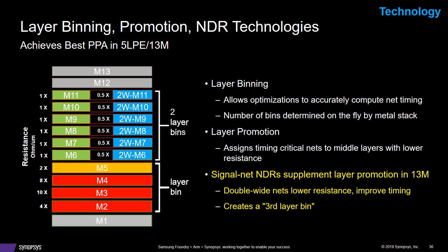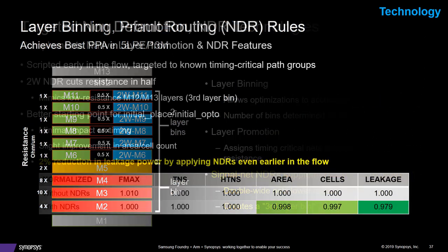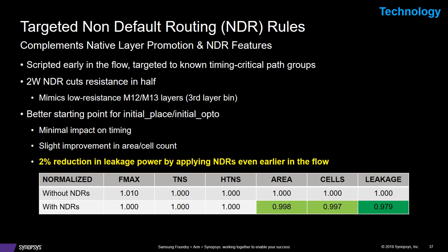This is all about recognizing timing-critical nets at the very beginning of the flow and getting them optimized appropriately. Expanding on the NDR trick, we used an additional scripting technique — the Optimize NDR occurs in compile fusion, but we're moving this up to the very beginning, because certain path groups are always timing critical. For those interfaces, we applied NDRs to those nets. We mostly saw a 2% reduction in leakage power — an indication that the tool is not working as hard, not having to use as many SLVT cells. It can use lower drive cells and saves power.